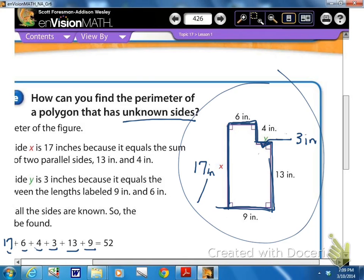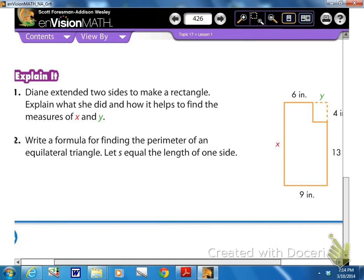So it's really a good thing to go ahead and write every side down. Then you can add them up, use a calculator, and the sum of all the sides would be 52 inches. So the tricky part on this is finding those unknown sides.